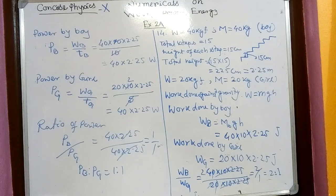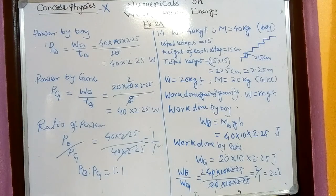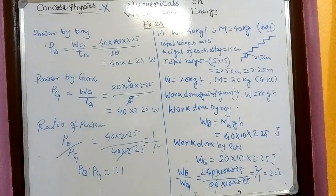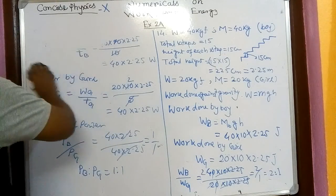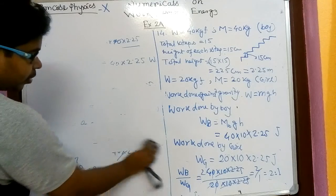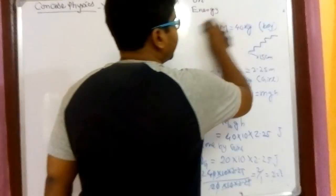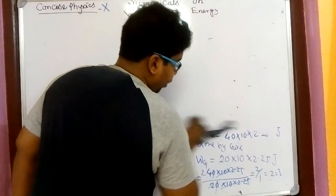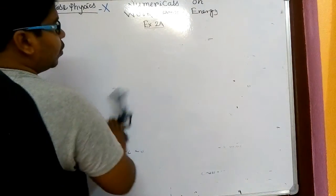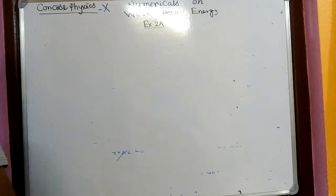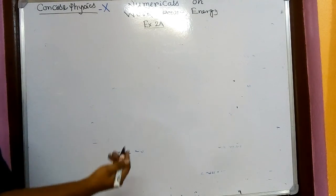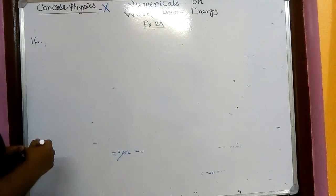So for both work done and power we have found the ratios. Now go for question number 16. If you do only these three numericals I think you can do all the others given, so my suggestion is that after seeing these numericals you complete all the numericals in the chapter. Pause the video if it is not copied, copy the question properly, and try to understand what we discussed.